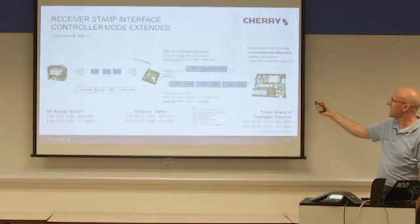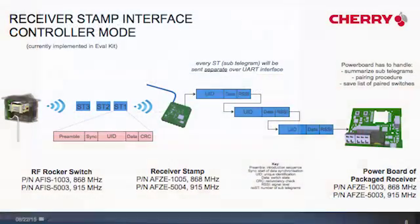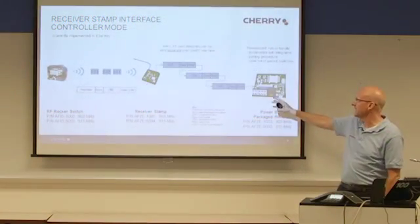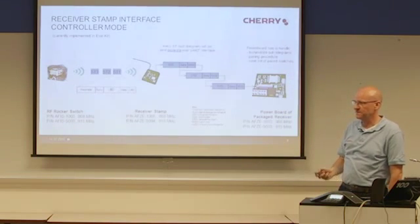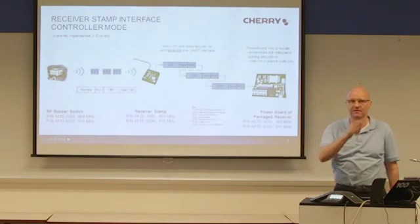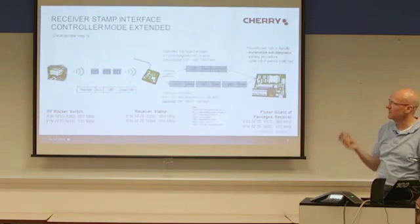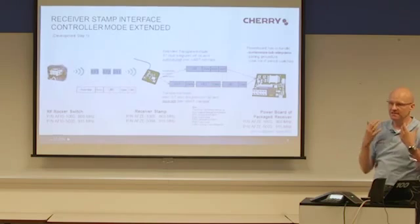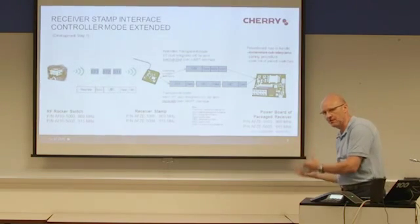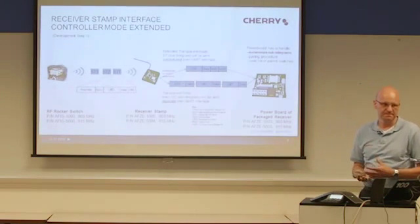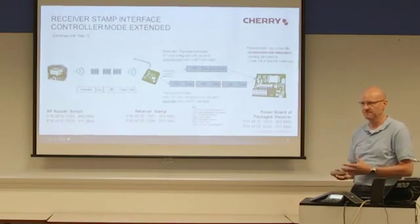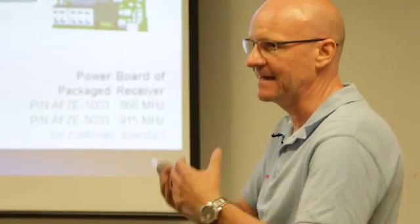For both the current step and development step one, a microcontroller is necessary on the power board. Intelligence is required — the power board has to handle all this information. So customers using our stamp in the current step or development step one need intelligence on their power board electronics; they need a microcontroller to handle this information.